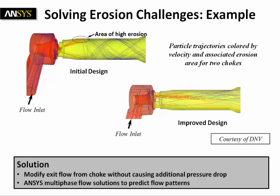We see the initial design on the left side where you can see the trajectory of the particles which are going to hit at high velocity the piping wall, and that of course will create erosion. Now here simulation was used to modify the exit flow from the choke without actually causing additional pressure drop.